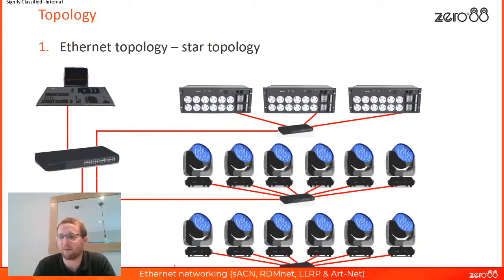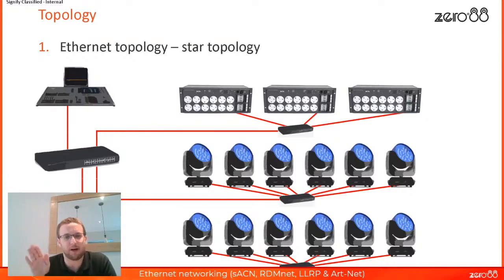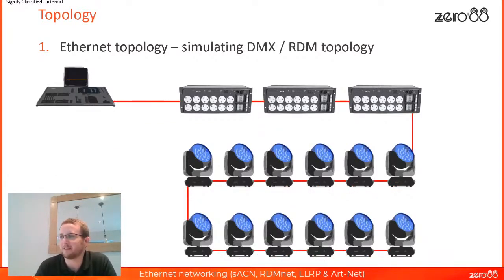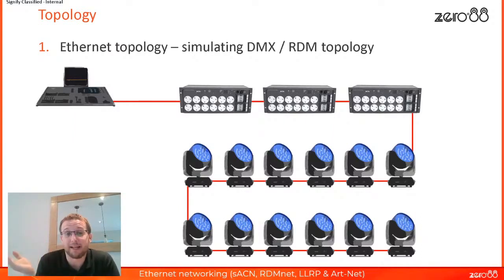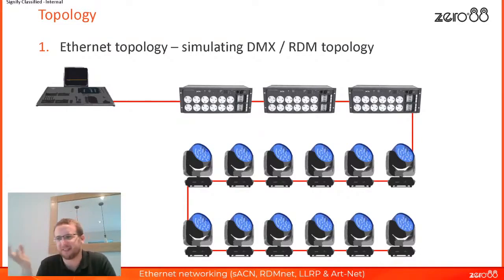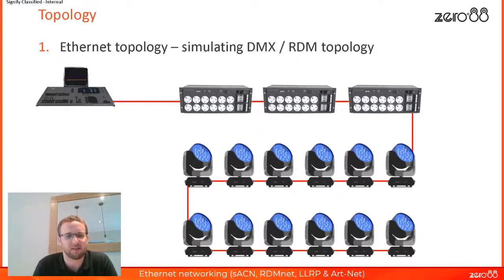Some manufacturers address this by putting these central boxes inside the product itself, so it still uses a star topology but simulates the daisy-chain familiarity of DMX — greatly reducing cabling. However, this is not officially how Ethernet is supposed to work; it's manufacturer-specific, so read up carefully on how they're achieving it and make sure you're comfortable with that.